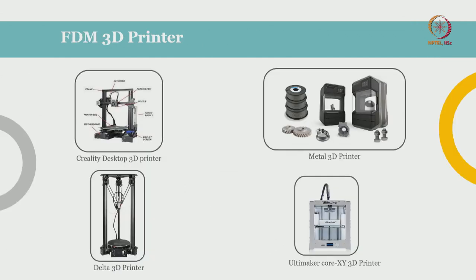Now let us look at some commercially available FDM 3D printers. The one on top is known as a Cartesian 3D printer. Here the nozzle is attached to the X axis — it can move in the X axis — and this axis is attached to a motor that moves it in the Z axis. The bed is attached to a motor that moves in the Y axis. The nozzle comes down, prints a layer, goes up, while the X-axis movement is controlled by the motor attached to the bed. This specific model is the Creality Ender 3, one of the most widely used 3D printers because of its cost-effectiveness and its ability to produce higher resolution prints.